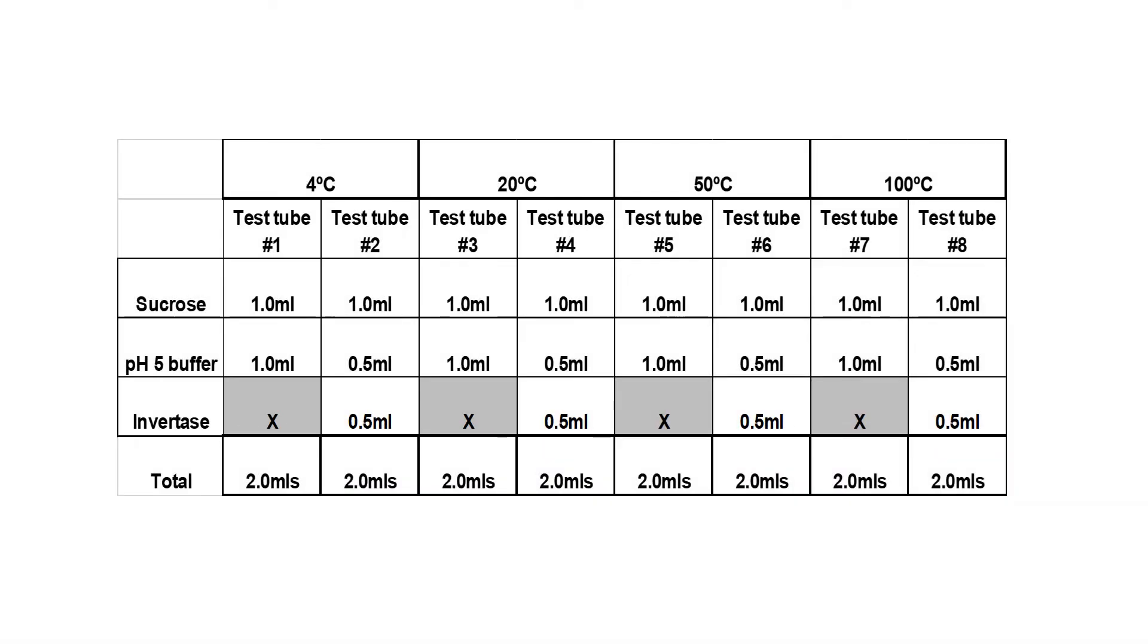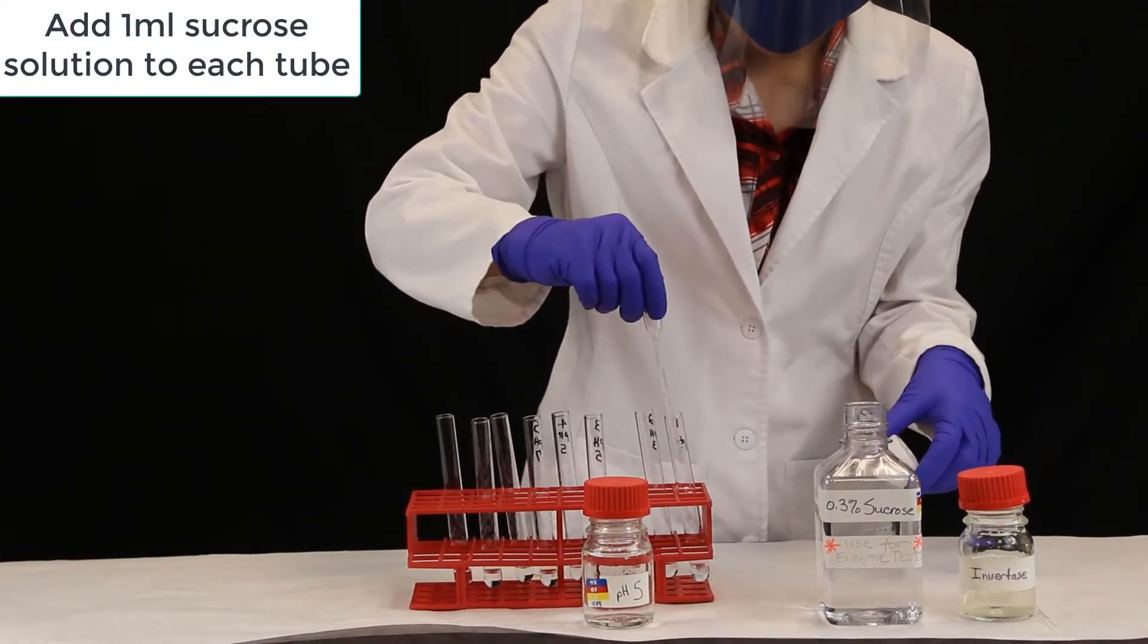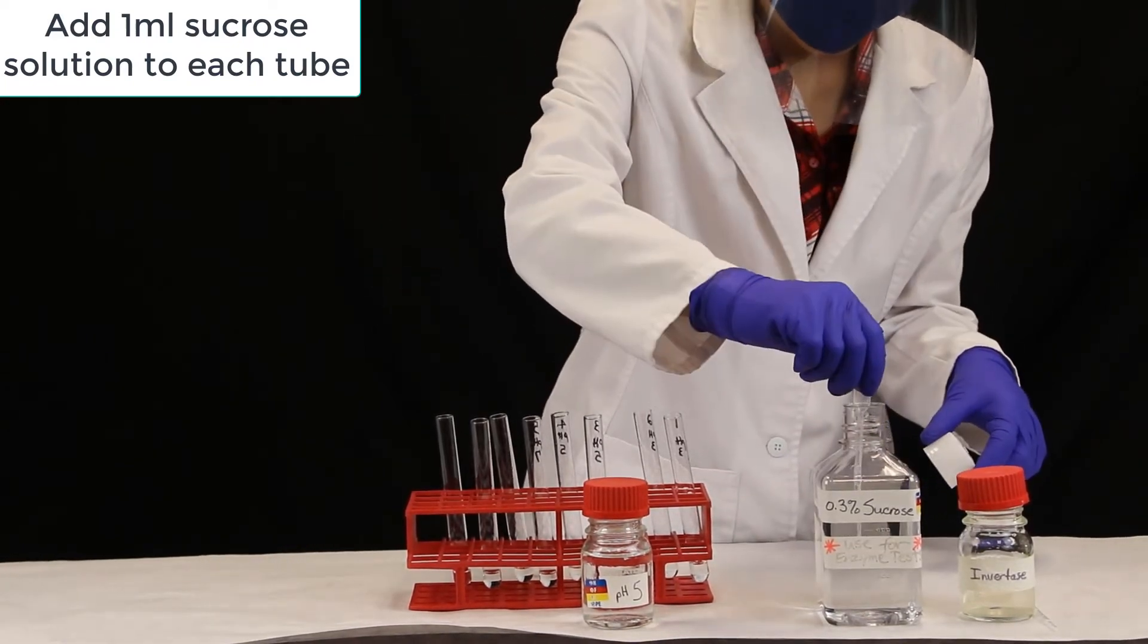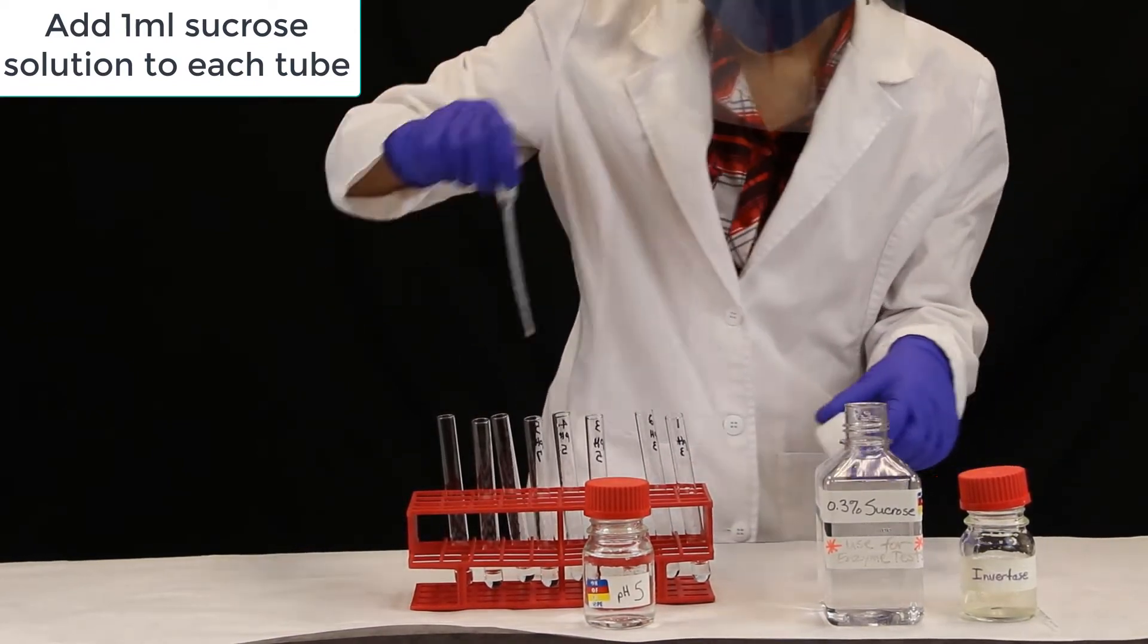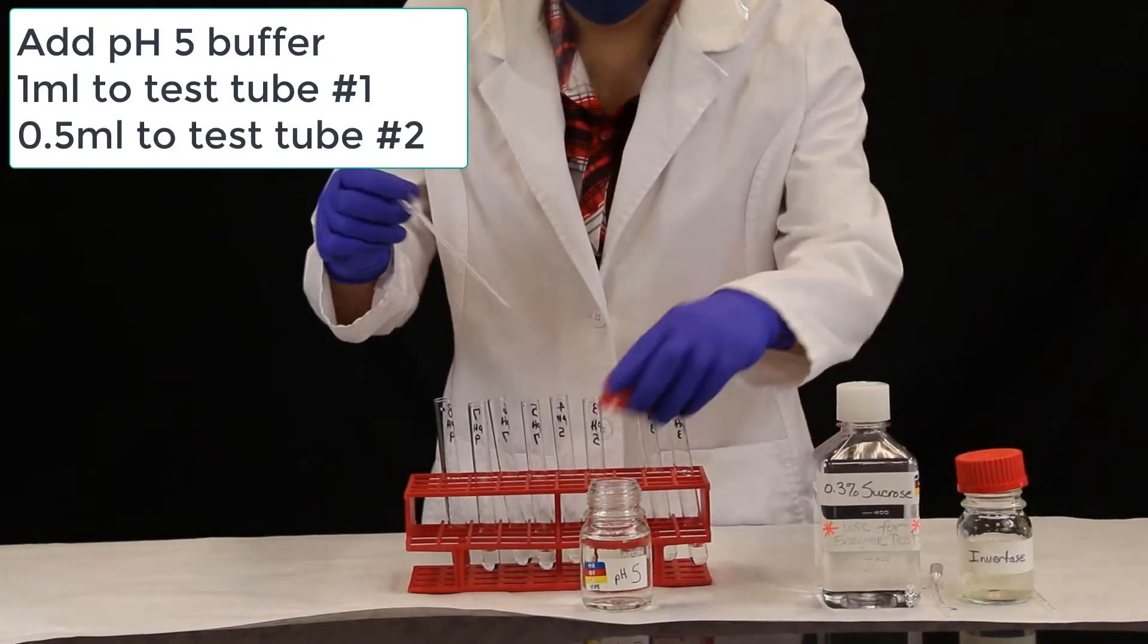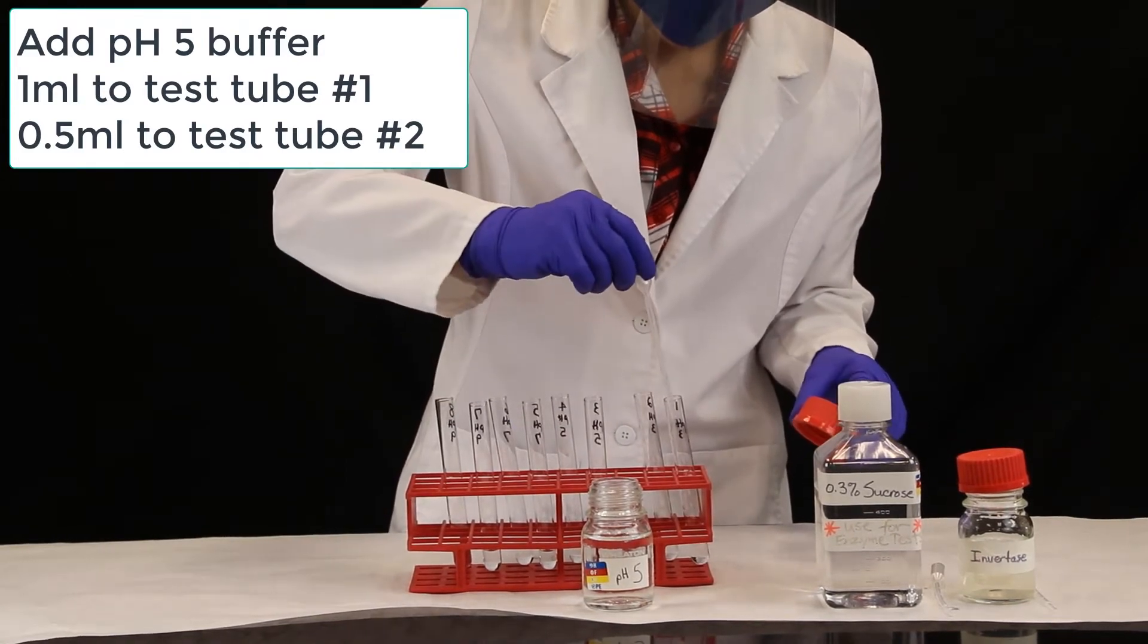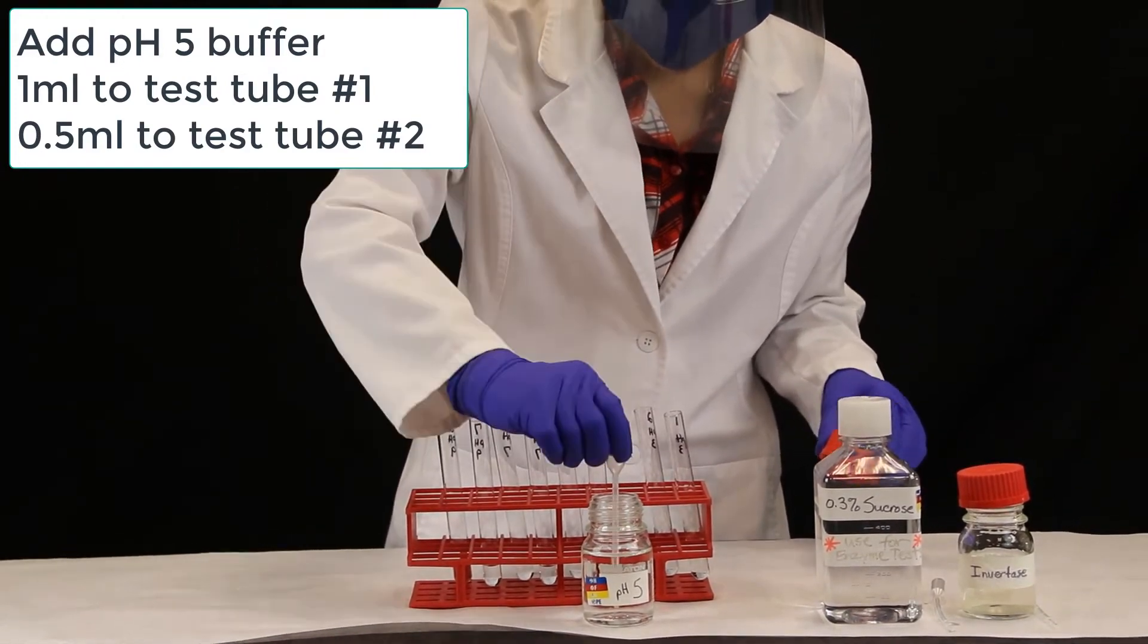We will be adding solutions in this order. First we will add 1 ml of sucrose solution to each test tube. Then we add our pH 5 buffer, 1 ml into test tube number 1, and 0.5 ml to test tube number 2.